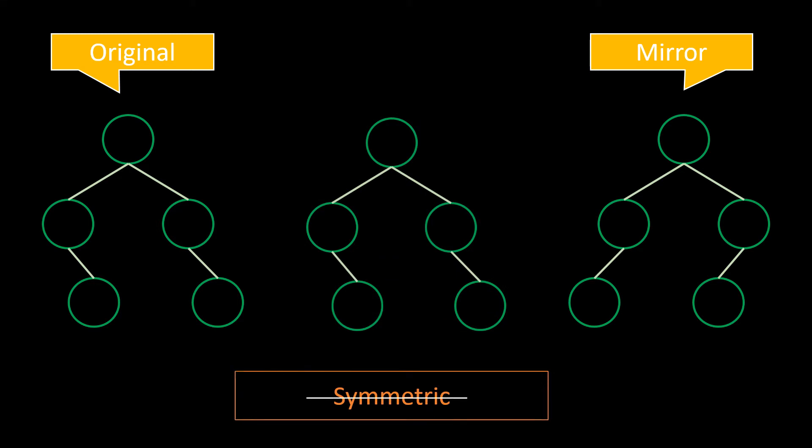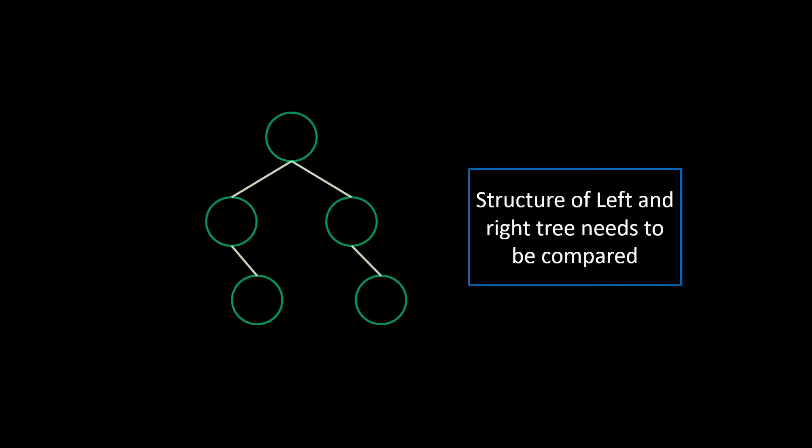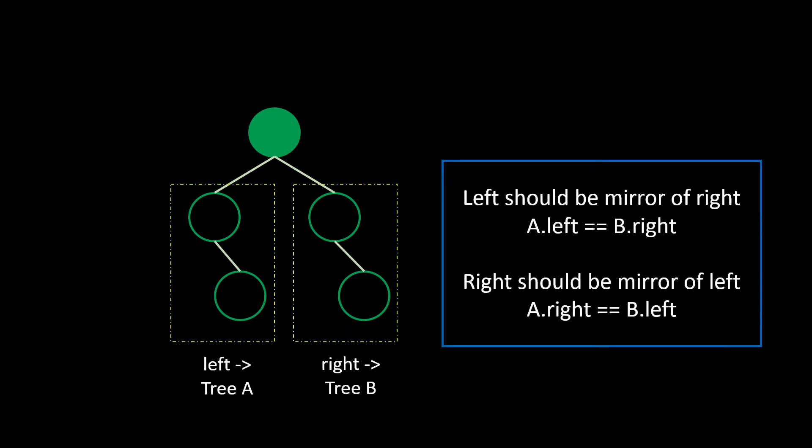So, what do we need to do? We need to compare the structure of left and right subtree. Let's take this tree. As its root is not empty, we will need to compare its left and right subtree. Let's call the left and right subtree as A and B. And now, we will compare these trees.